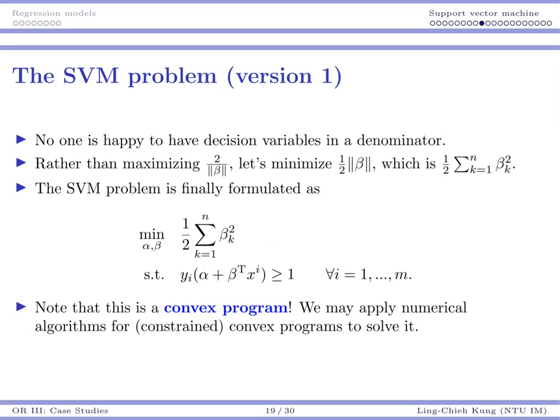Of course, no one is happy to have decision variables in the denominator. So instead of maximizing this, why don't we minimize its inverse? So we are going to minimize the inverse of the original objective function.